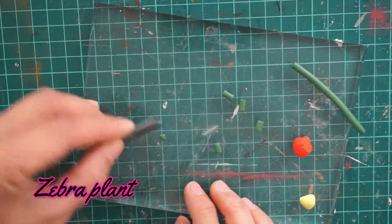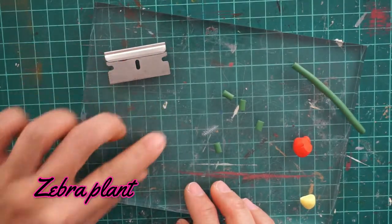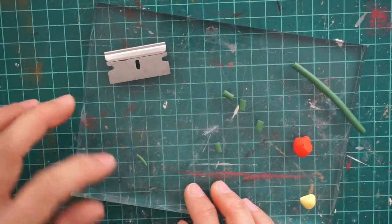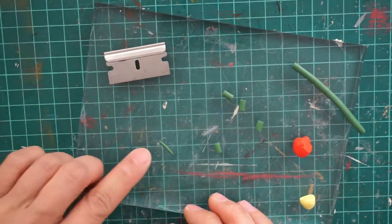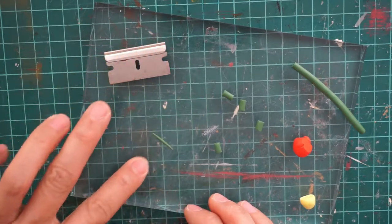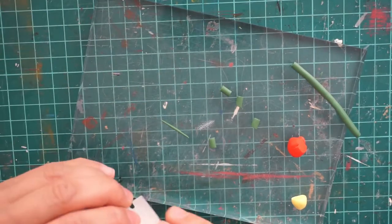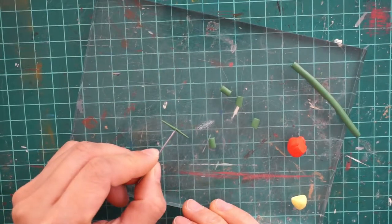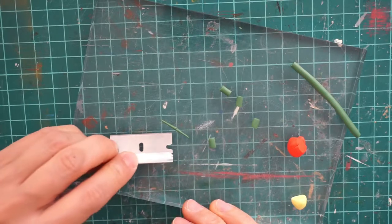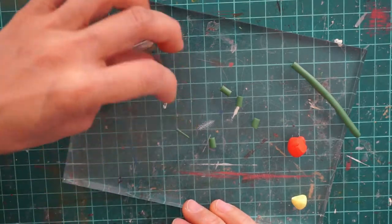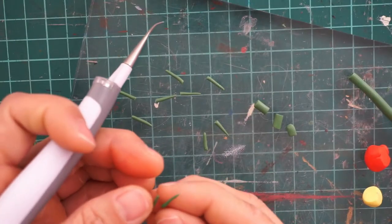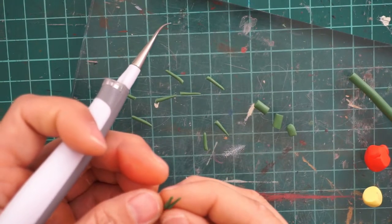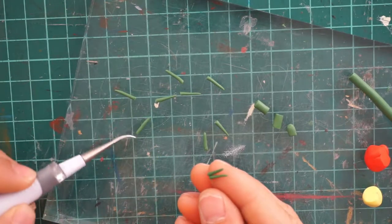The next plant I am making is not a cactus but rather a succulent plant. To make the zebra plant, take a small amount of clay and roll it to make a snake. Focus on making both ends pointy, cut them in half, and make more of these.